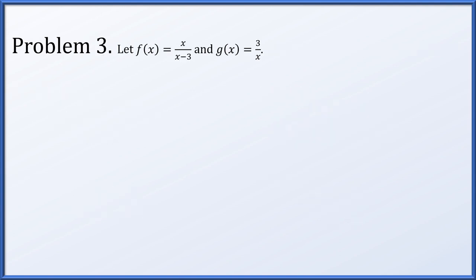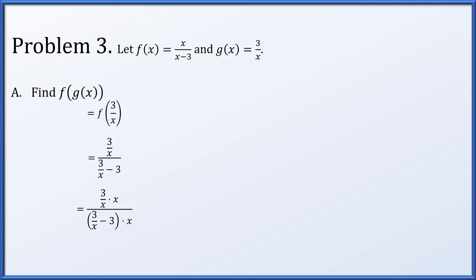Problem 3: let f of x be x over x minus 3 and g of x be 3 over x. For f of g of x, we plug 3 over x into f, giving us 3 over x divided by 3 over x minus 3. Multiplying numerator and denominator by x — valid only when x is not zero — we get 3 over 3 minus x. Crucially, the domain does not include x equals zero because zero cannot be plugged into g to begin with, even though the simplified form might suggest otherwise.